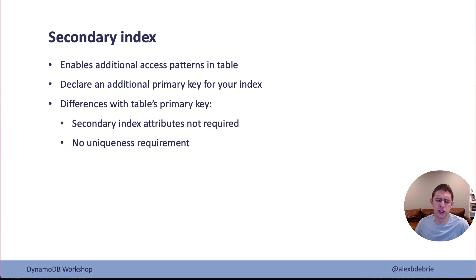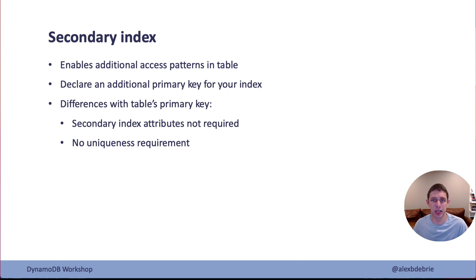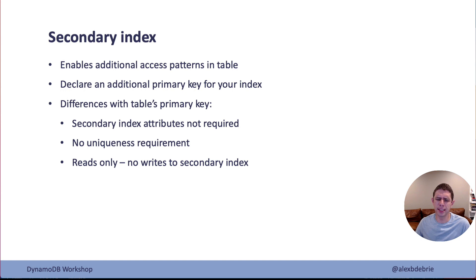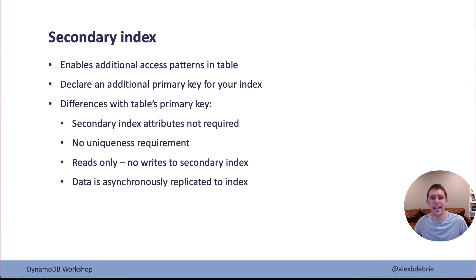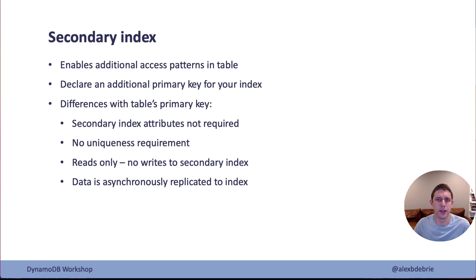A second difference is there's no uniqueness requirement on secondary index key attributes. With your main table, each item needs to be uniquely identified by the primary key, so you won't have two items with the same primary key values. That's not the case in a secondary index — you can have multiple items with the same values for that secondary index's primary key. Also, you can only do reads against secondary indexes, not writes. Writes go to your main table and get asynchronously replicated out to the secondary index, where you can then perform reads.